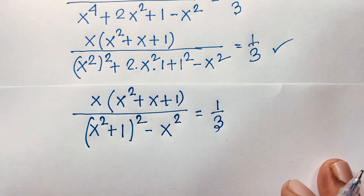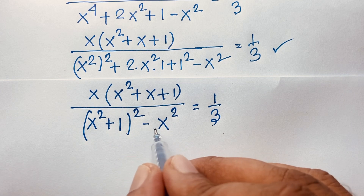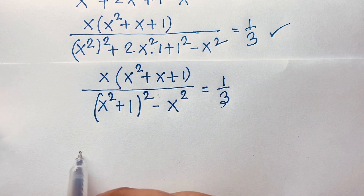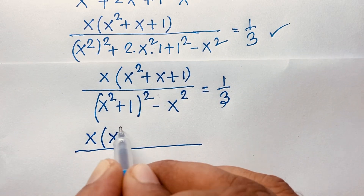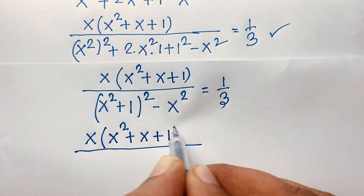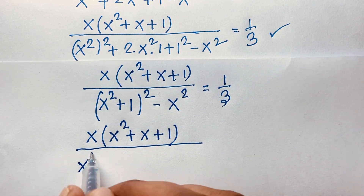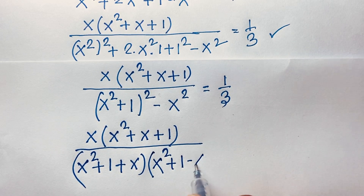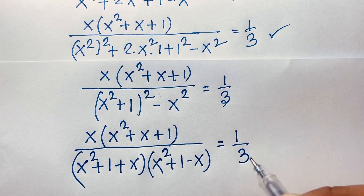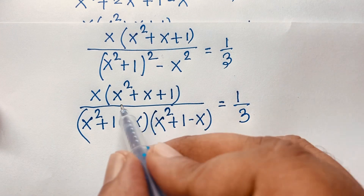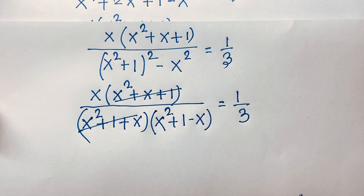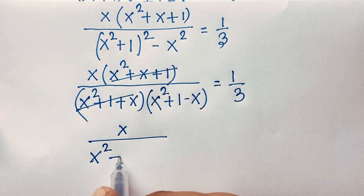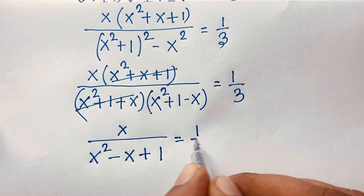Since a squared minus b squared equals (a plus b)(a minus b), the denominator (x squared plus 1) squared minus x squared factors as (x squared plus 1 plus x)(x squared plus 1 minus x). The numerator x times (x squared plus x plus 1) cancels with (x squared plus x plus 1) in the denominator. So we get x over (x squared minus x plus 1) equals 1 over 3.